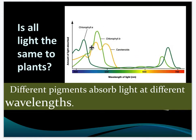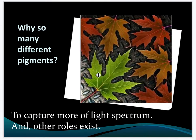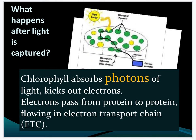Is all light the same to plants? No — it bounces green back off. And why does it use so many different plant pigments? Just to take advantage of as much of the spectrum as possible. That's the main reason.